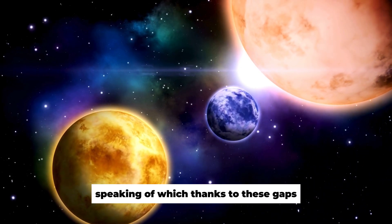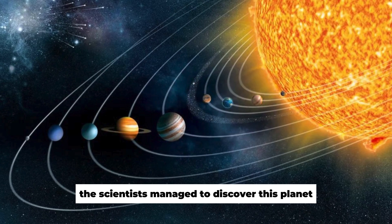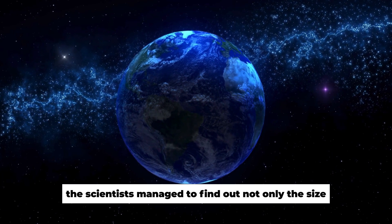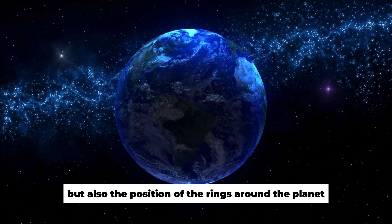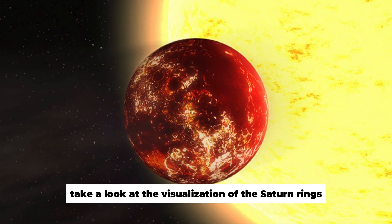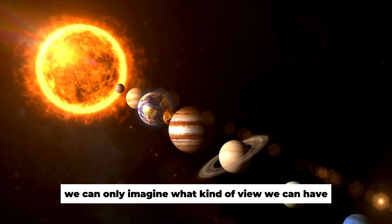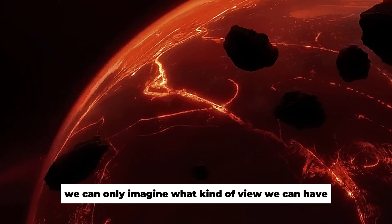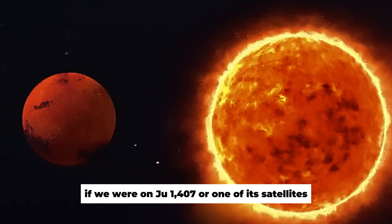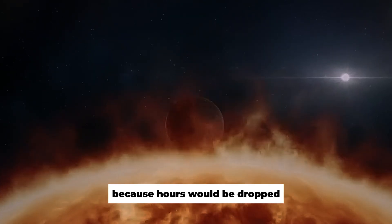Speaking of which, thanks to these gaps, the scientists managed to discover this planet. Using the transit observation method, the scientists managed to find out not only the size, but also the position of the rings around the planet. Take a look at the visualization of the Saturn rings, a truly magnificent sight. We can only imagine what kind of view we can have if we were on J-1407b or one of its satellites, but this view would definitely cost us a jaw because ours would be dropped.